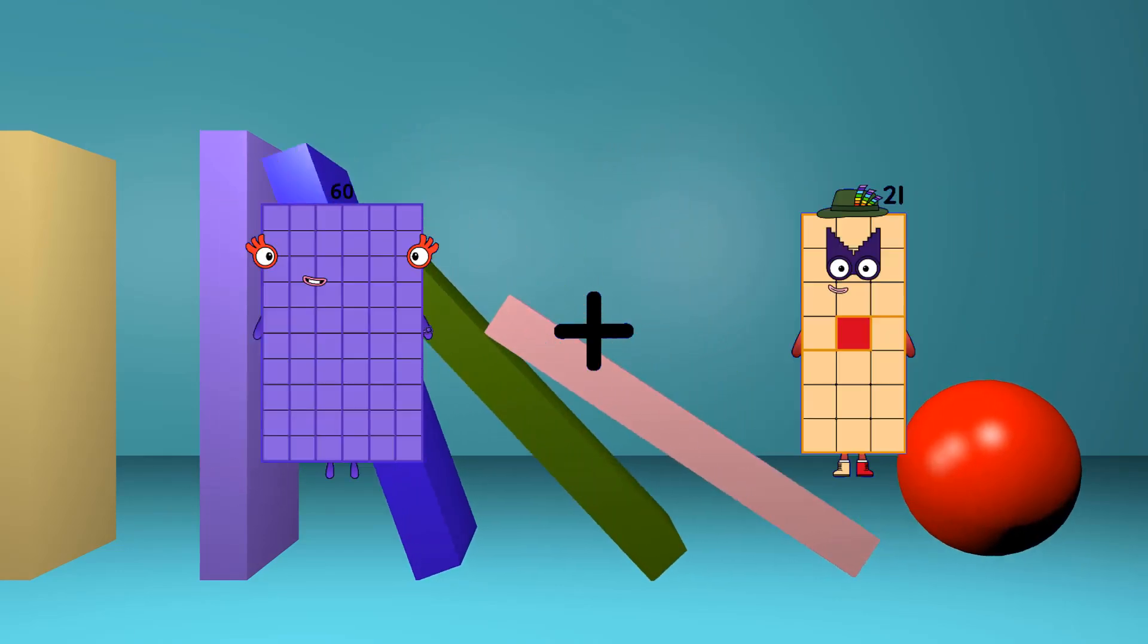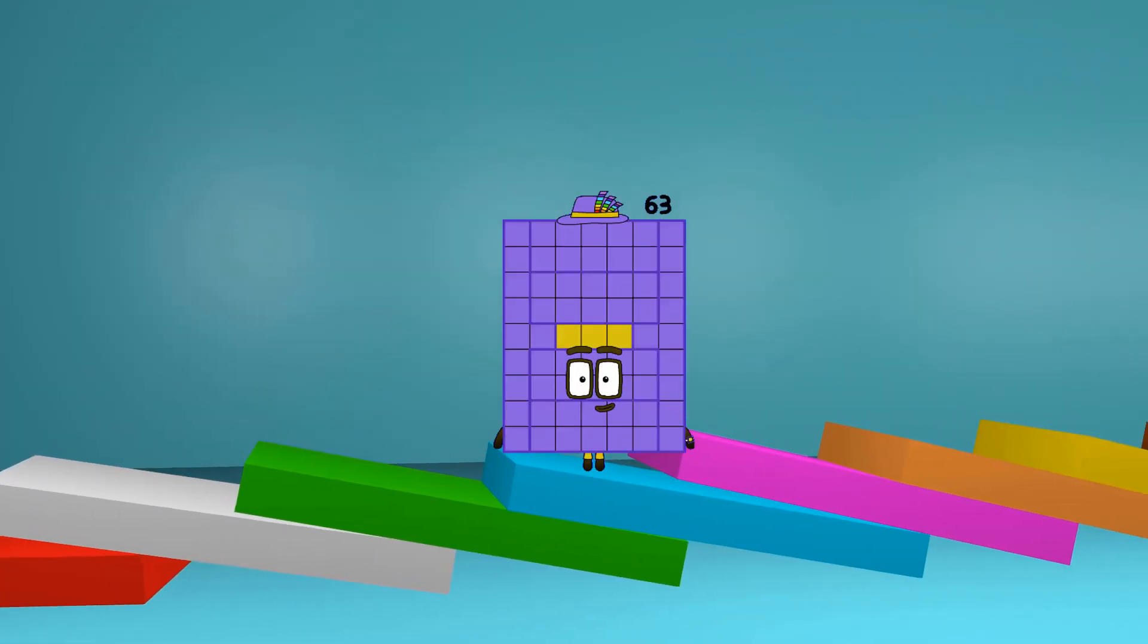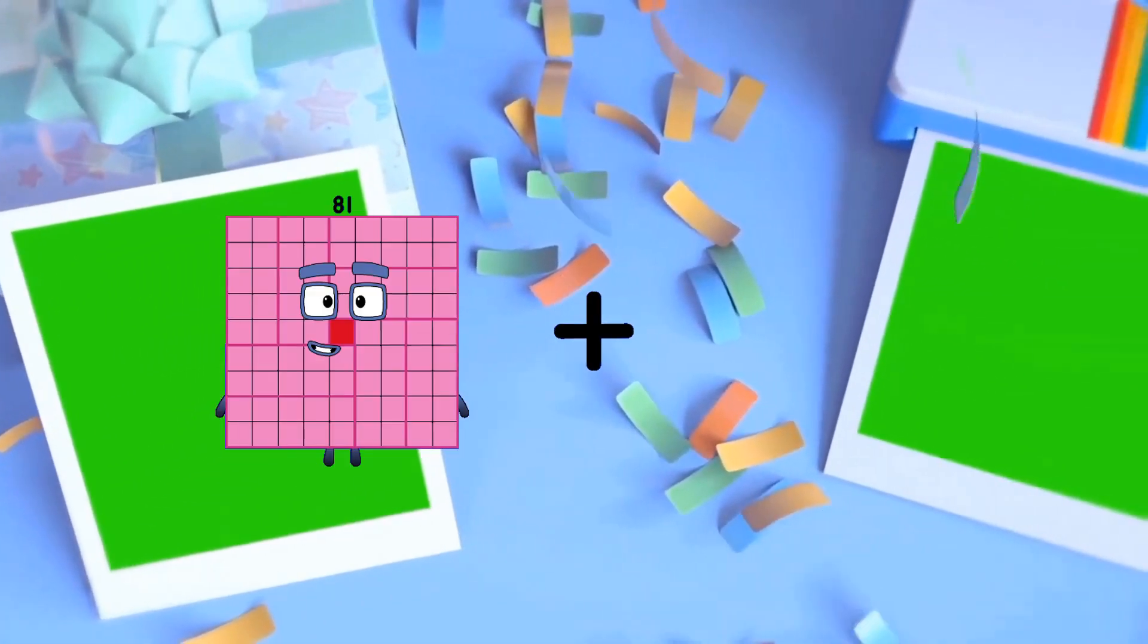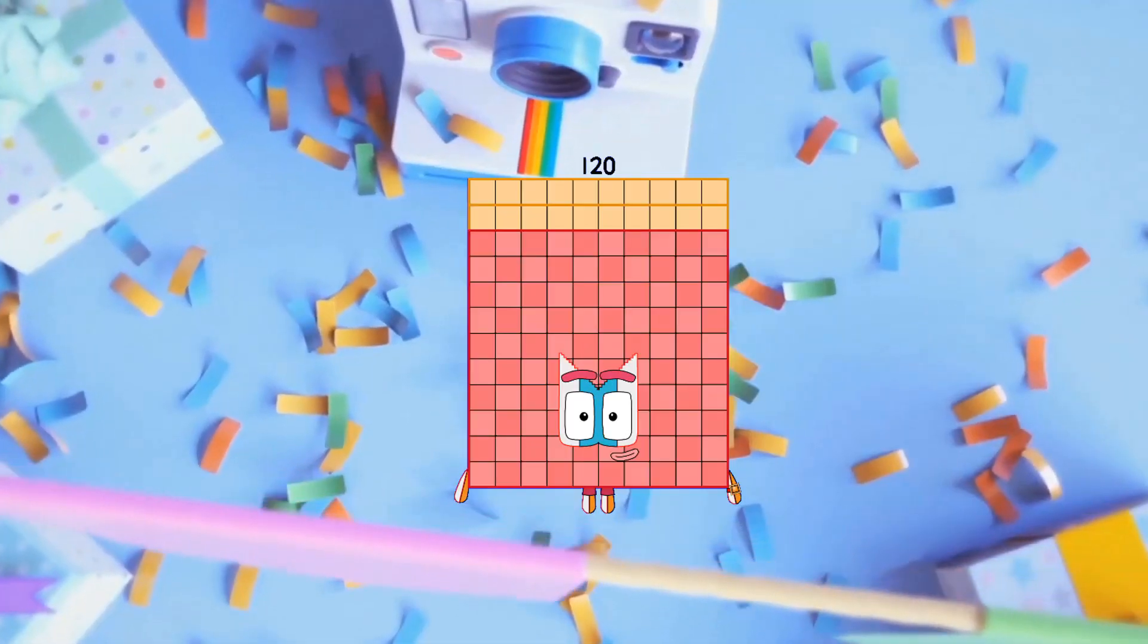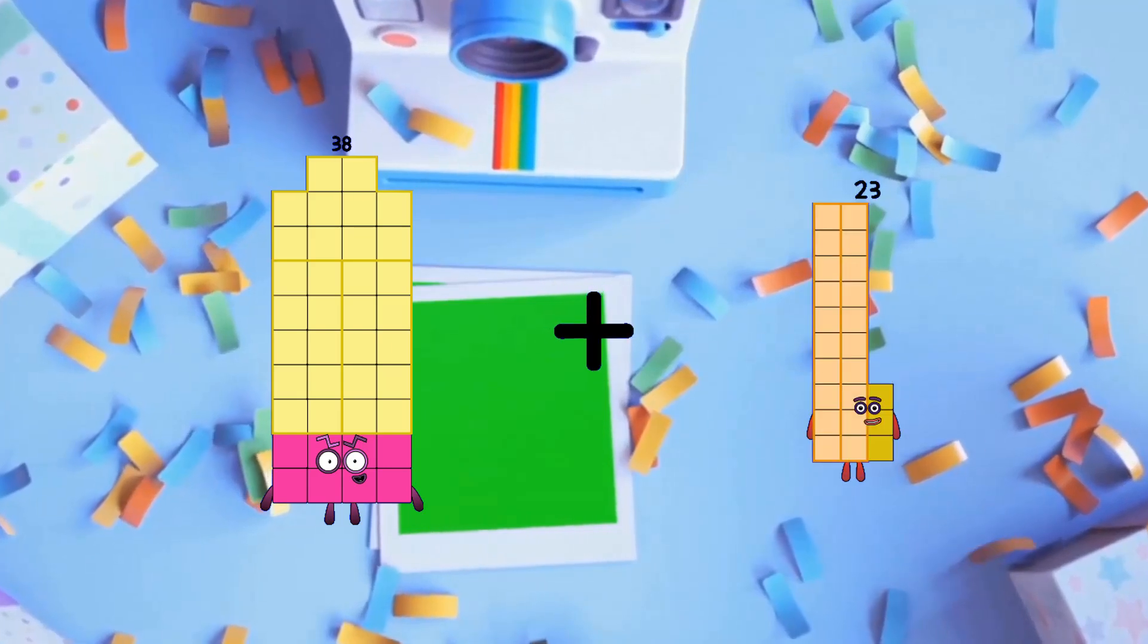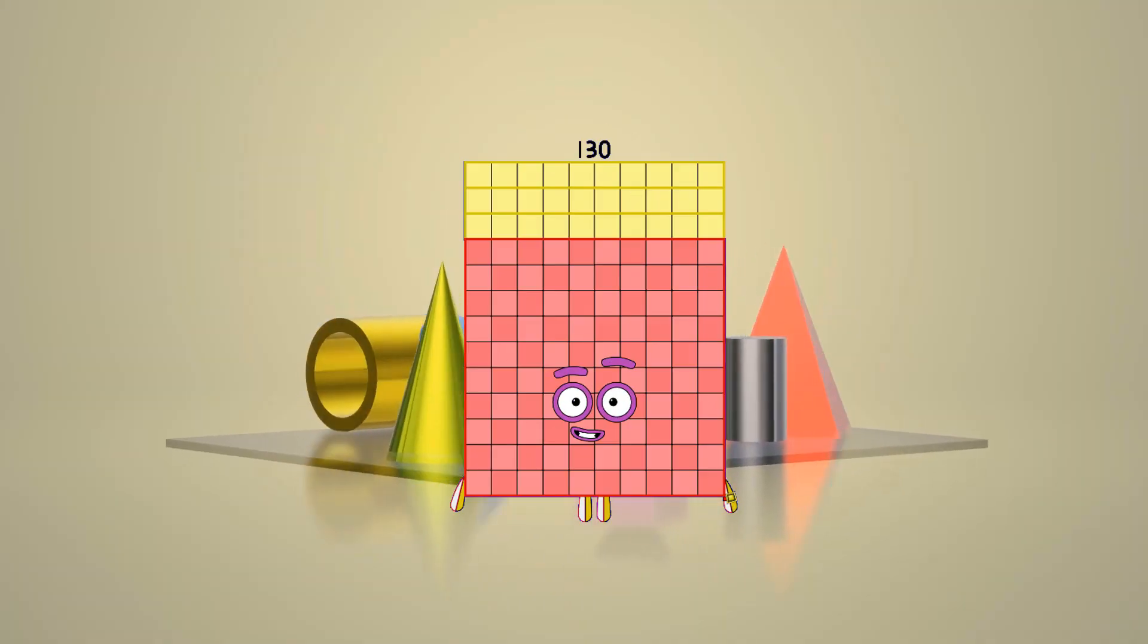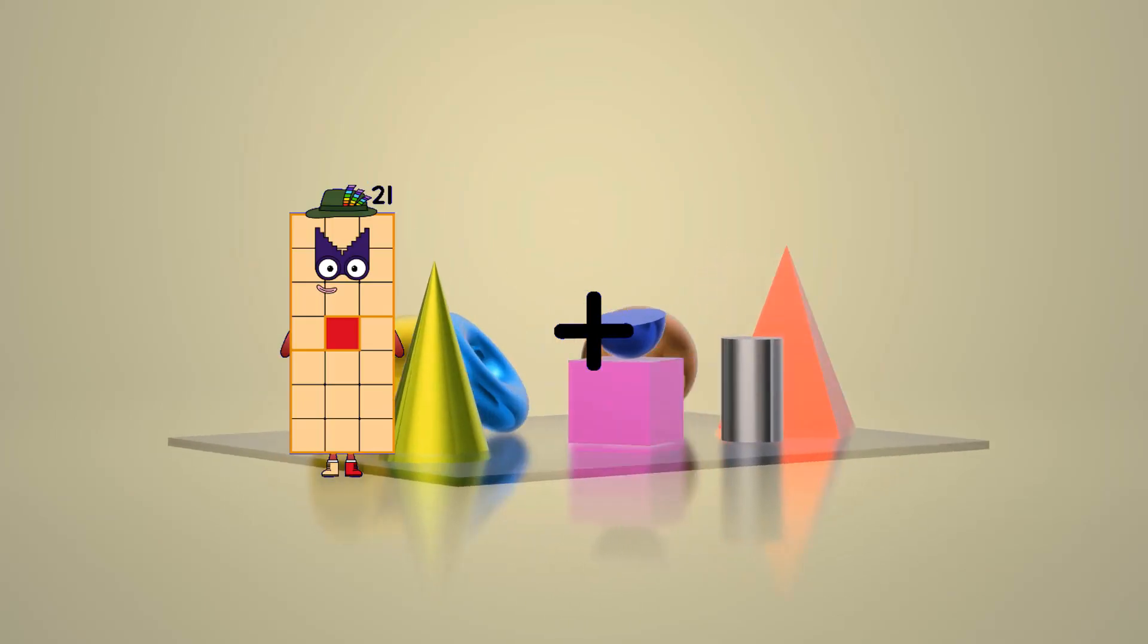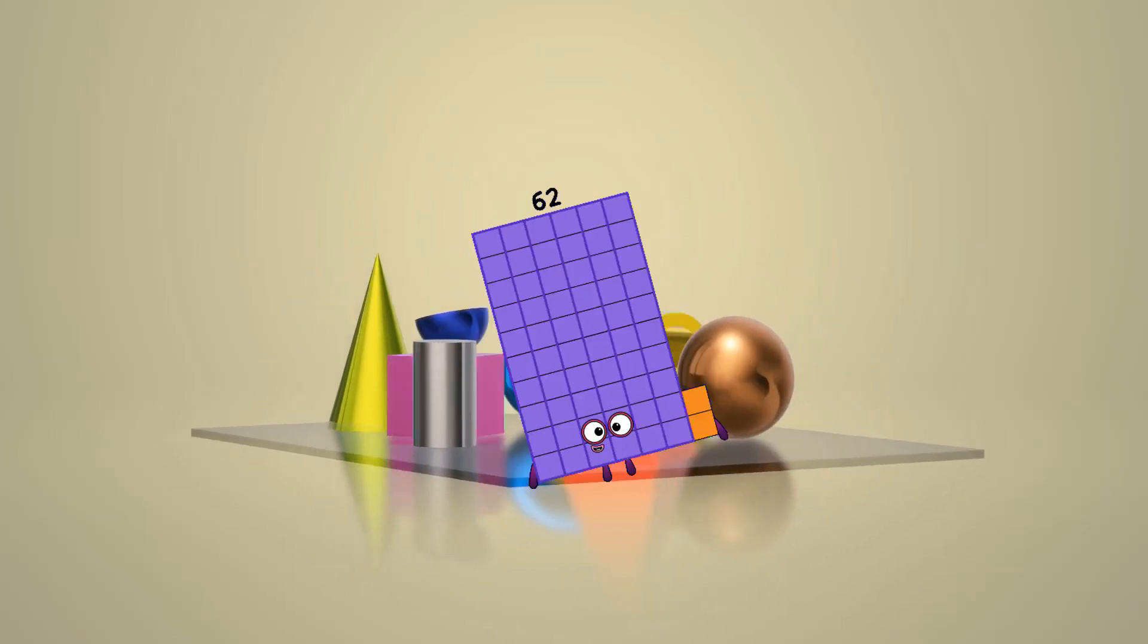60 plus 3 equals 63. 81 plus 39 equals 120. 38 plus 92 equals 130. 21 plus 41 equals 62.